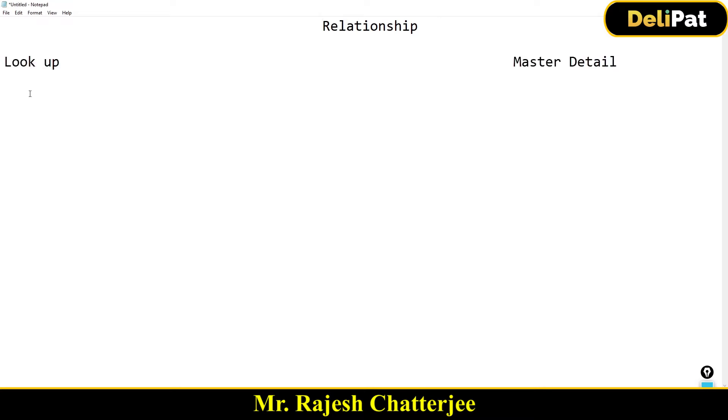We're going to talk about relationships in Salesforce. Salesforce is basically a database where you, as an admin, are configuring the database using something called objects. We don't have tables here — we call those entities 'objects.' Salesforce has two main types of relationships: lookup relationship and master-detail relationship. Apart from these, there are a couple more which we will discover later.